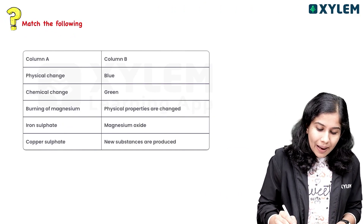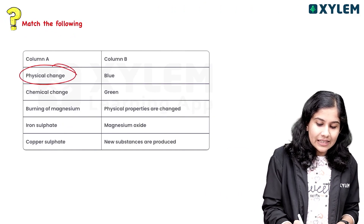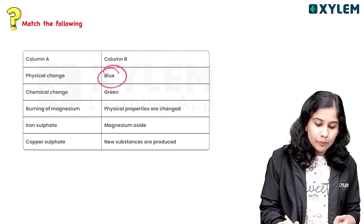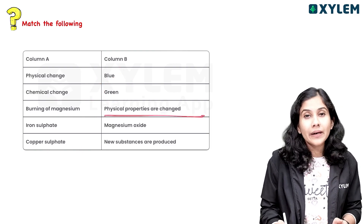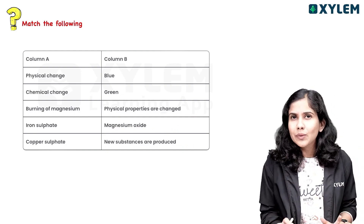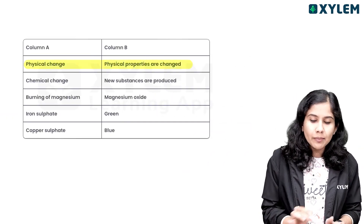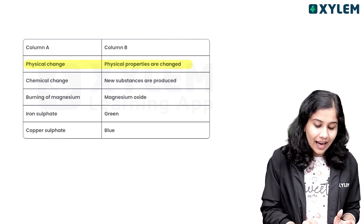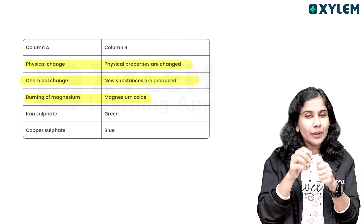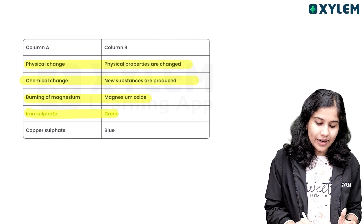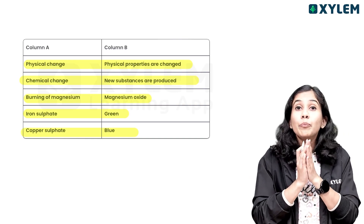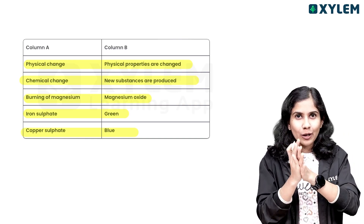This is the chemical change of magnesium. Iron sulphate and copper sulphate — Column B is blue and green. Physical properties are changed. Magnesium oxide — new substances are produced. Chemical change produces a new substance. This is the chemical change of magnesium oxide. Iron sulphate and copper sulphate: blue vitriol is copper sulphate, and it is blue.